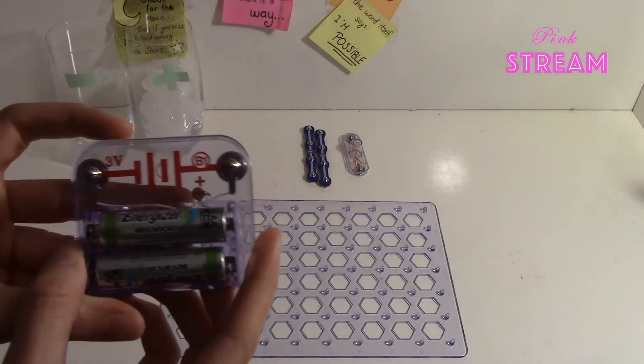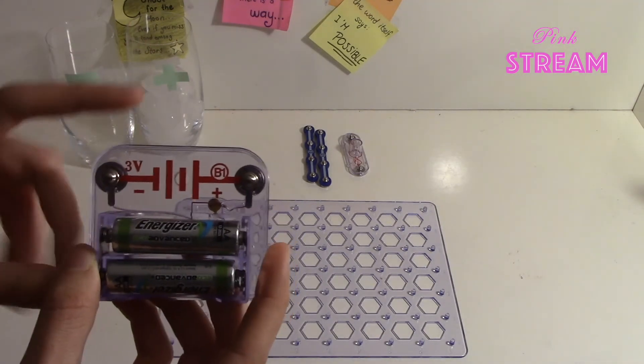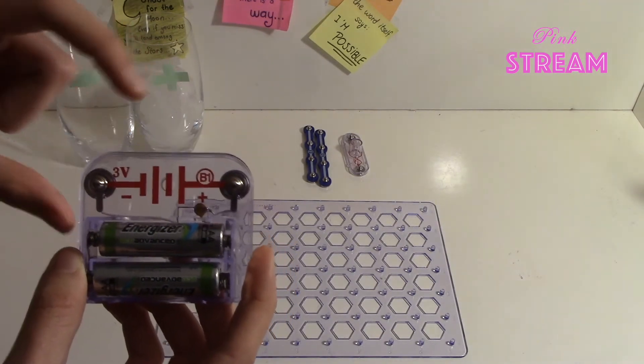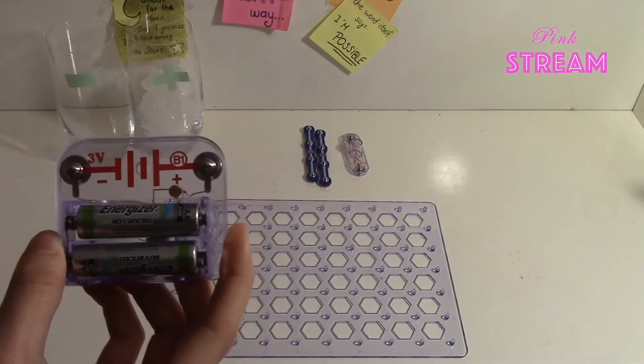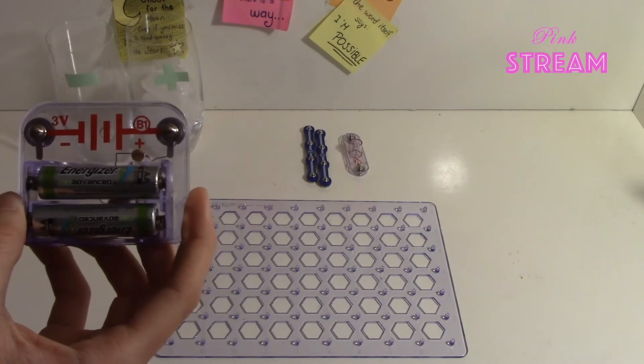As you see here, all batteries have one plus side and one minus side, which means positive and negative. So what does this positive and negative mean?